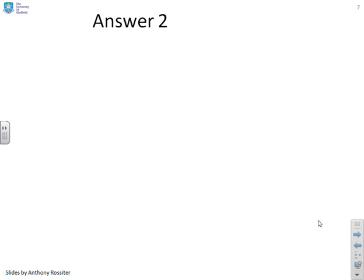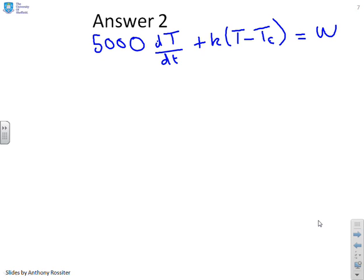Let's look at the answer then. Well the first thing I'm going to do is write down a typical model for such a heat system. So we had 5000, that was the heat capacity, times dT dt, plus K into T minus the external temperature equals the heat supply. Now the first information we were given is that with 1000 watts we can maintain 10 degrees in steady state. So what that tells me is K times 10 equals 1000 or K equals 100. That's the information I was given in the question.